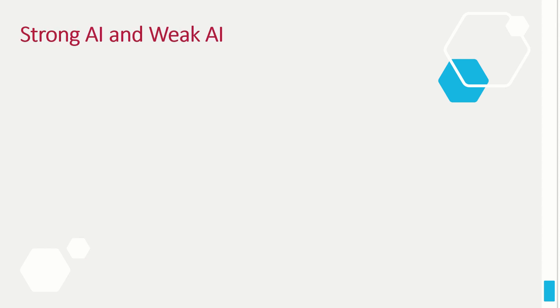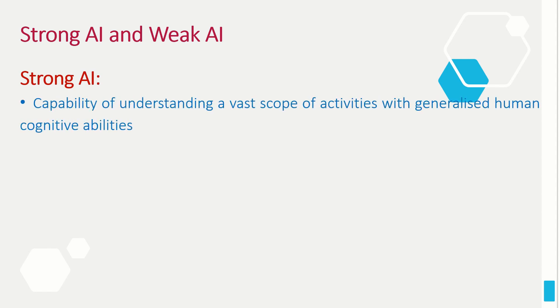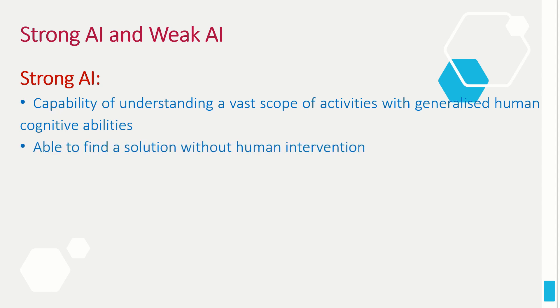There are two types of AI, which we call strong AI and weak AI. Strong AI includes the capability of understanding a vast scope of activities with generalized human cognitive abilities. It is assumed that these machines possess cognitive abilities like how humans would take decisions on their own, and they will be able to find a solution without human intervention. As of now, we see such AI only in movies — we don't have them in reality.